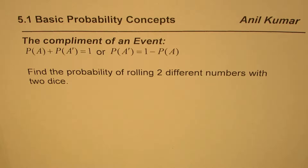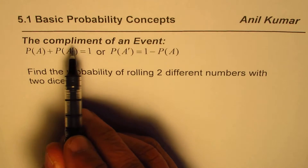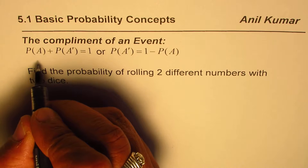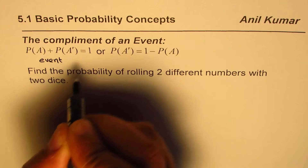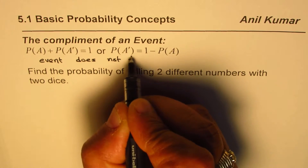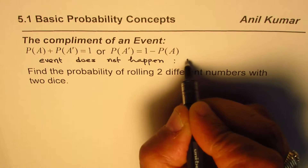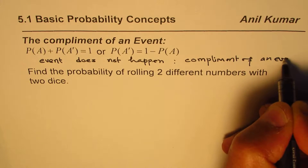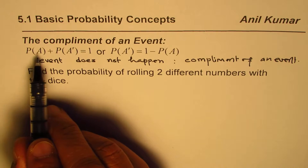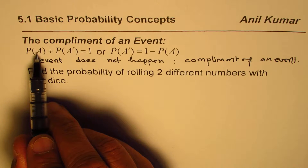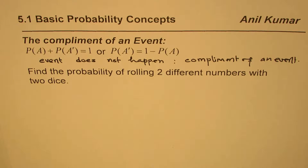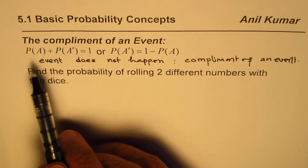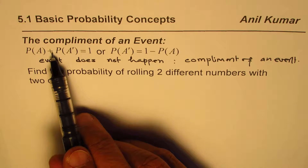I'm Anil Kumar and in this video we'll try to understand the concept of complement of an event and use this concept to find the probability. When we say complement of an event, it really means that the event does not happen. So if event A does not happen, that is the complement of event A. The probability of event A equals 1 minus the probability of the event not happening.